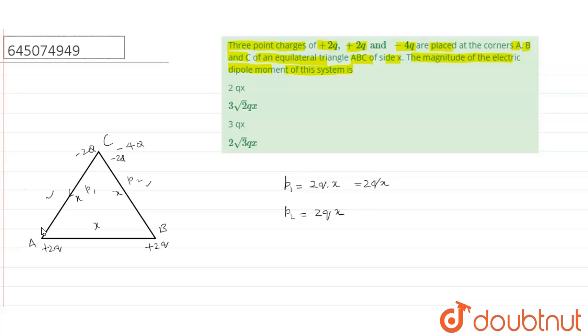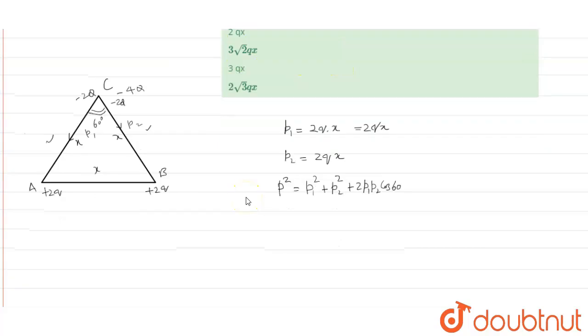The direction of dipole is in this direction from negative to positive and angle is 60 degree. If this is a vector quantity, then resultant of them will be p square is equal to p1 square plus 2p1 p2 cos 60. If p1 and p2 are same, let us say they are equal to p0.